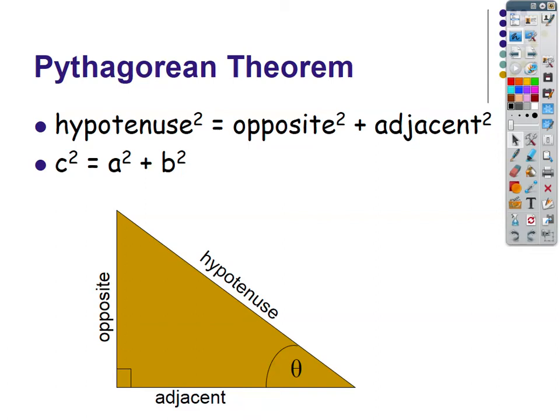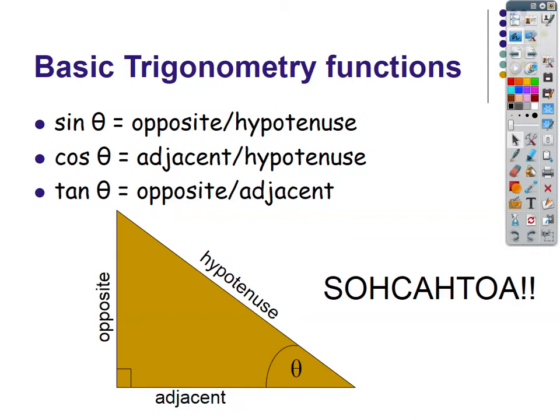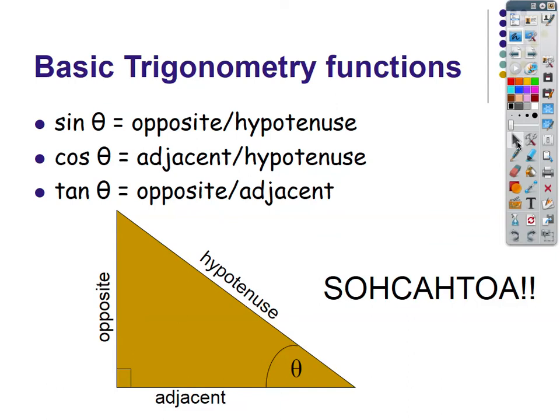For trigonometry, you need to know your SOH-CAH-TOA. Sine is opposite over hypotenuse. Cosine is adjacent over hypotenuse. Tangent is opposite over adjacent. We use degrees — not radians. That's especially important for AP students taking calculus at the same time. We stay in degrees. We don't look at this from a radian perspective at all. Remember to set your calculator to degrees when you start your test.